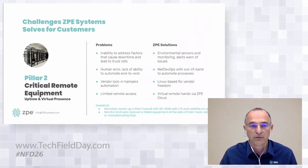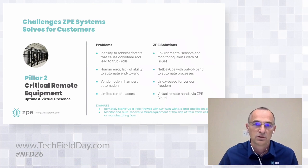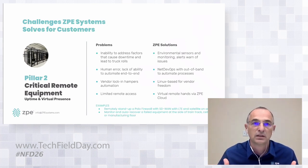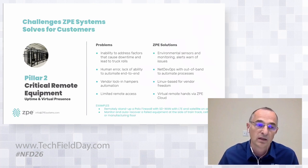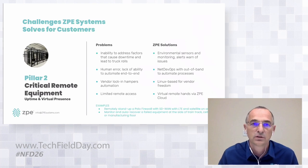Having a solution that can do zero-touch provisioning means you can just replace a missing box — if it doesn't arrive at the destination, send another one. The device can phone home to the cloud and through two-side authentication start being zero-touch provisioned over the WAN. That's a critical use case that Pillar 2 and 3 can address.